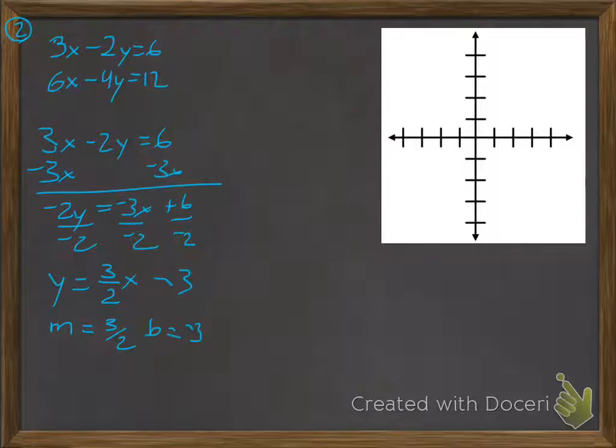I'll go ahead and graph that first. I'm going to use a darker color. So I have my y-intercept at negative 3, rise up 1, 2, 3, run 2. Rise up 1, 2, 3, run 2. Again, put as many points as you can on the line, and it's going to be more accurate.